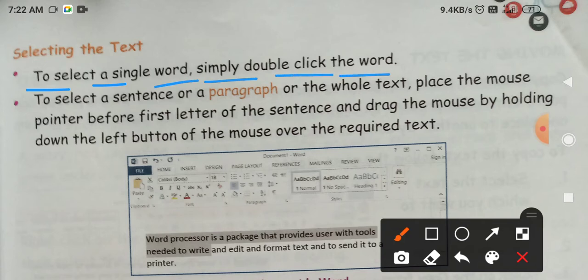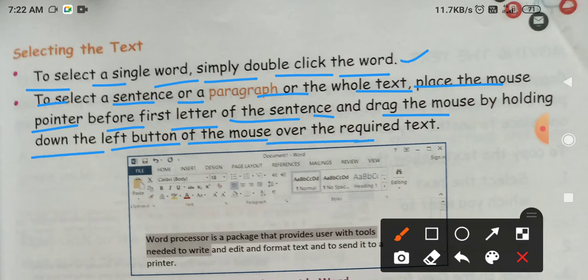To select a single word, simply double click the word. If you want to double click on a single word, what will happen? To select a sentence or paragraph or the whole text, place the mouse pointer before the first letter of the sentence and drag the mouse while holding down left button of the mouse over the required text.